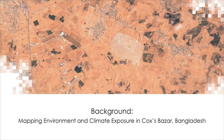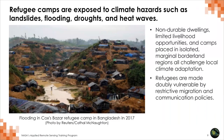Let's do a little background on mapping environment and climate exposure in Cox's Bazar in Bangladesh. From a global perspective, we know that refugee camps are exposed to climate hazards such as landslides, flooding, droughts, and heat waves.